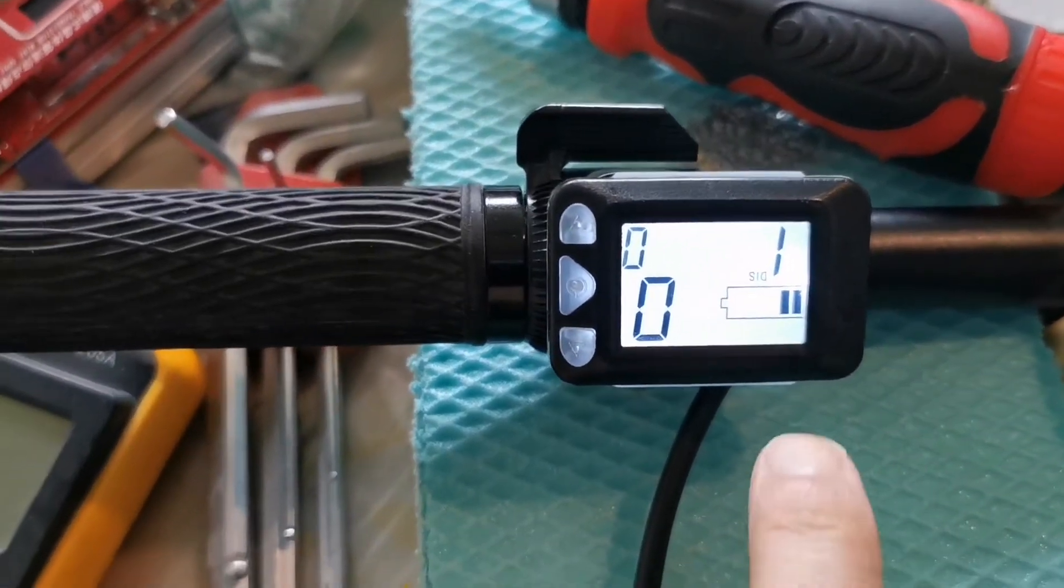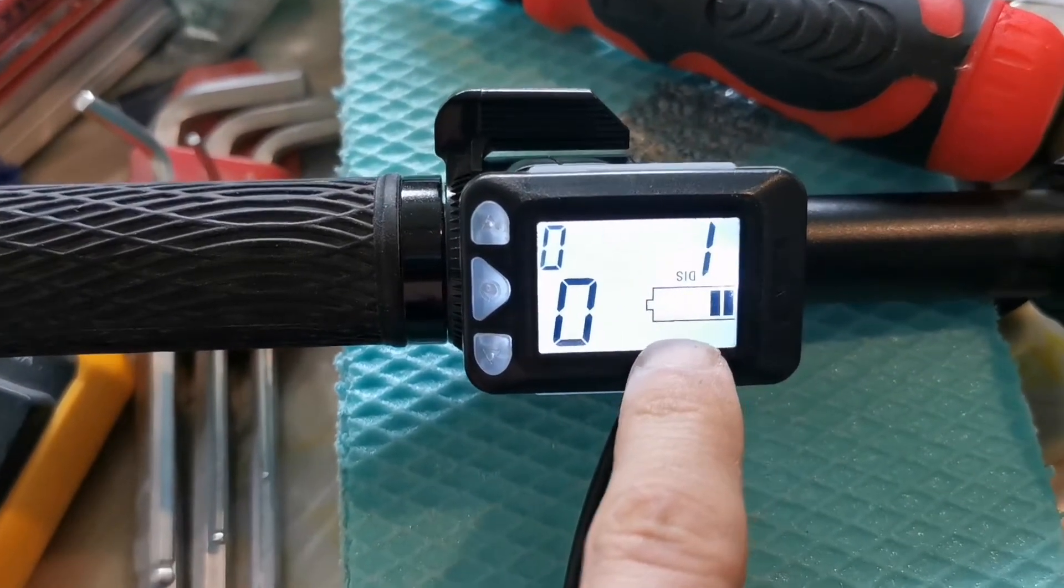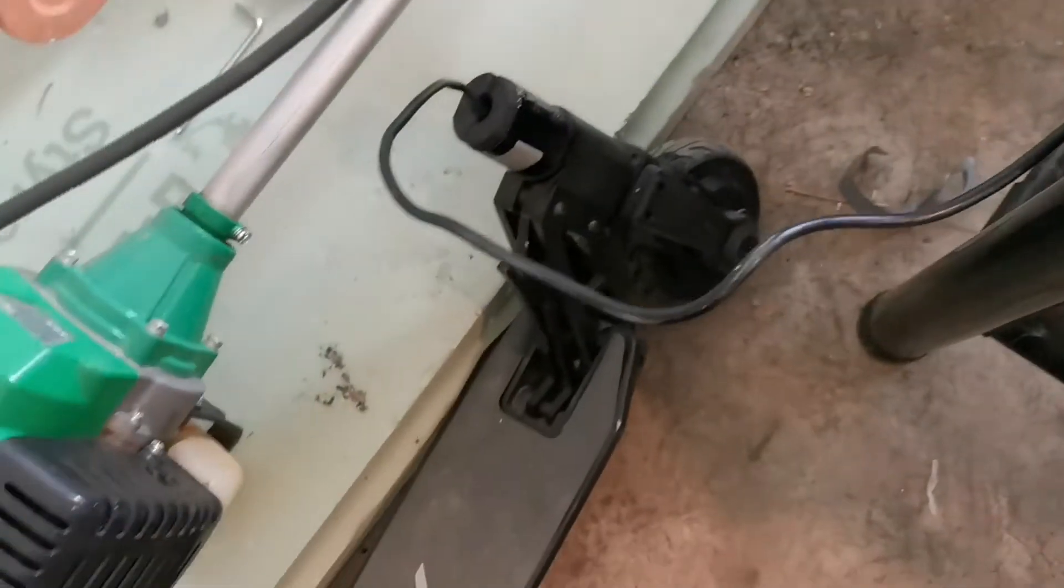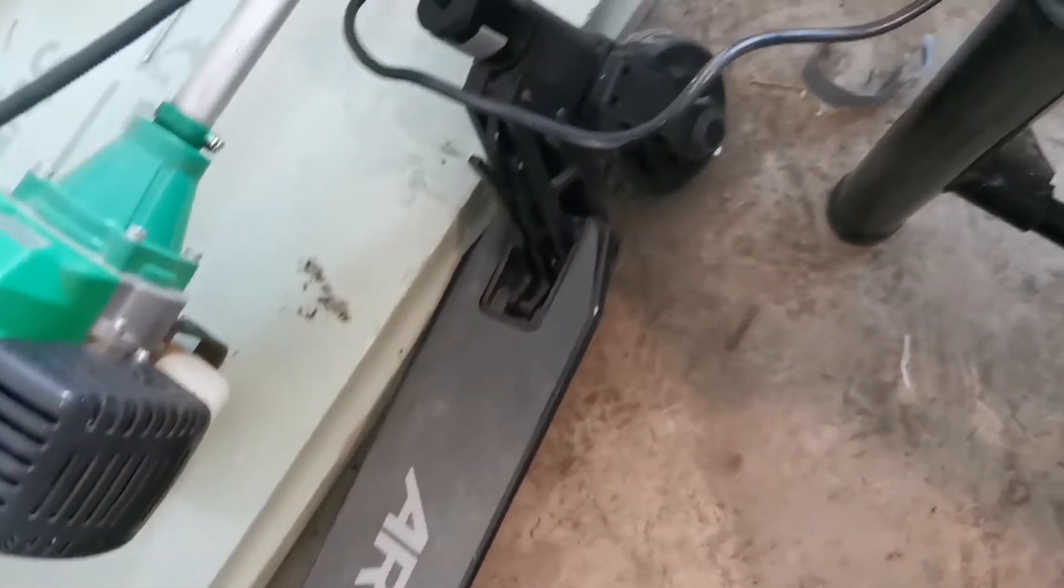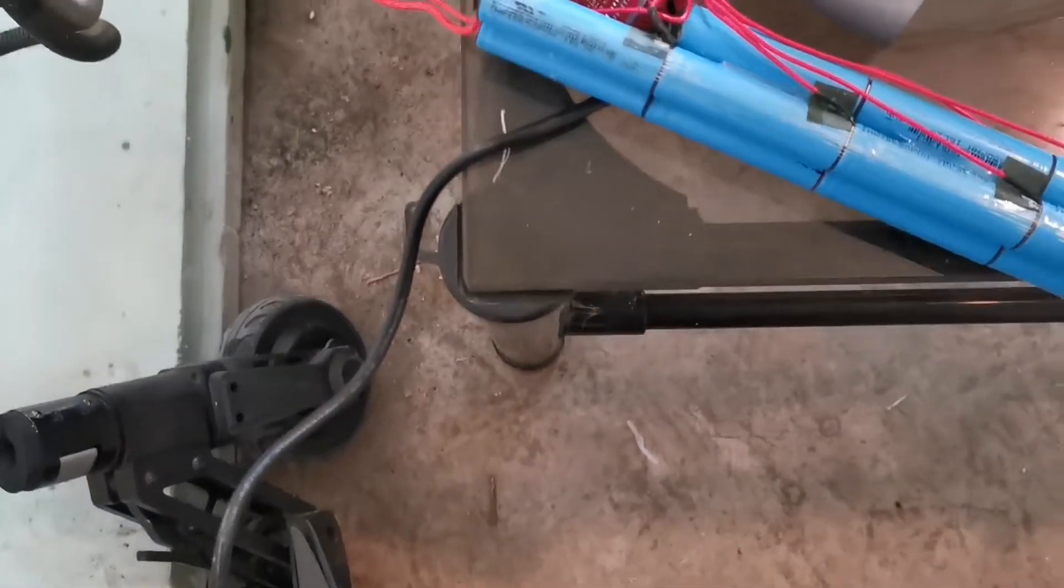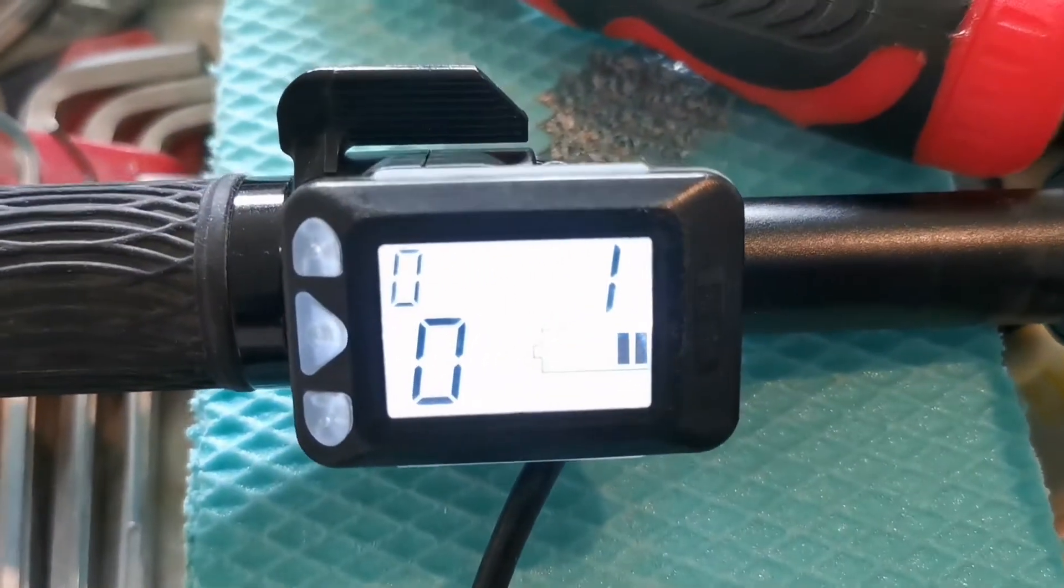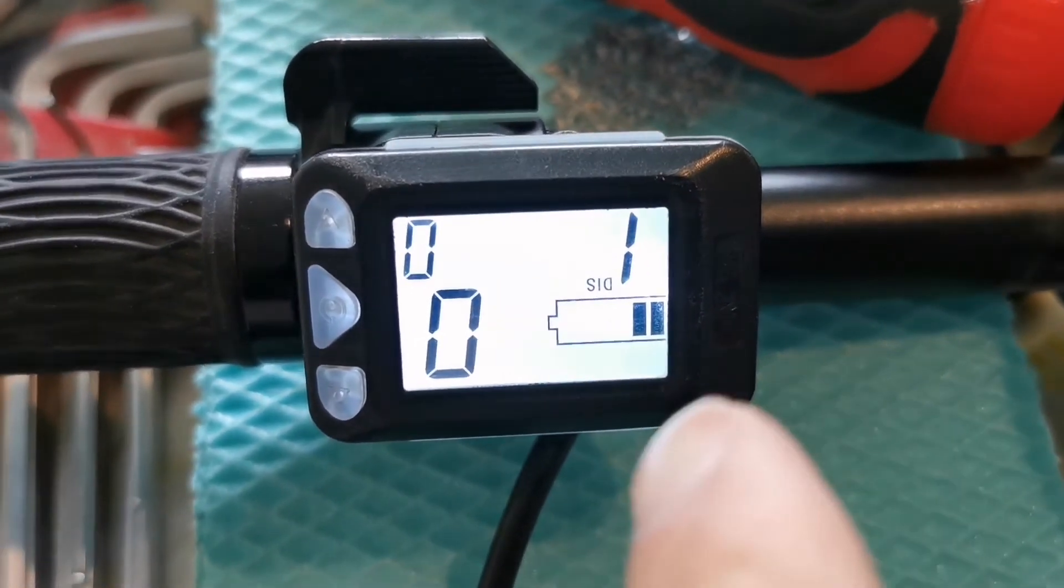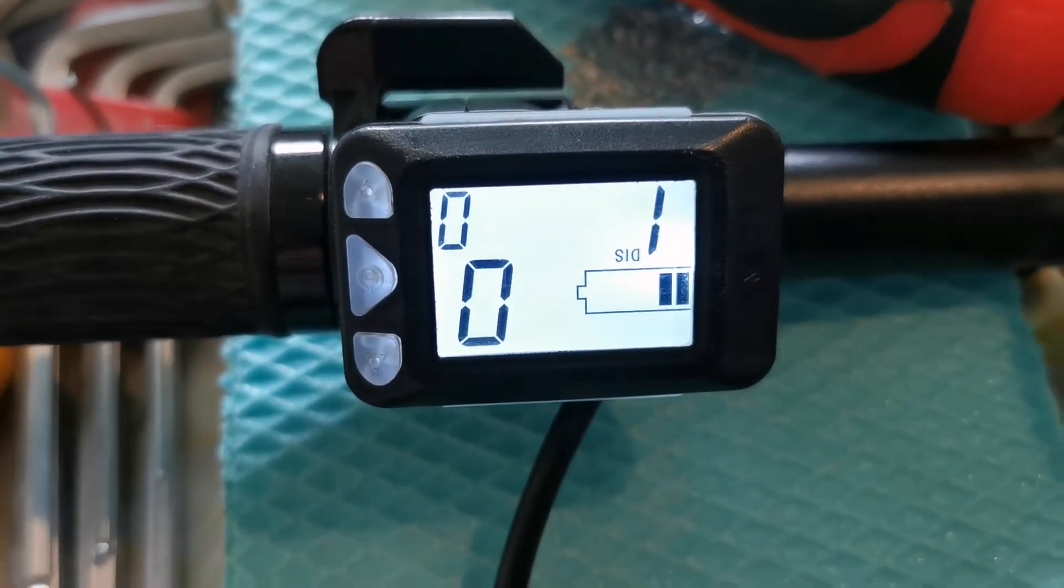As you can see we have 2 bars. So that means, let's say that this electric scooter can do 10 kilometers. So that means one bar is like 1.5 maybe 2 kilometers.